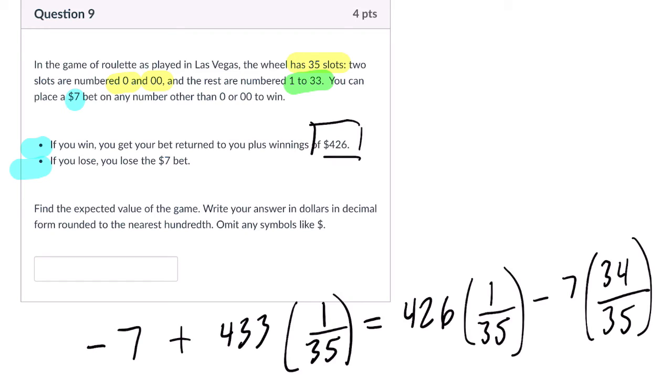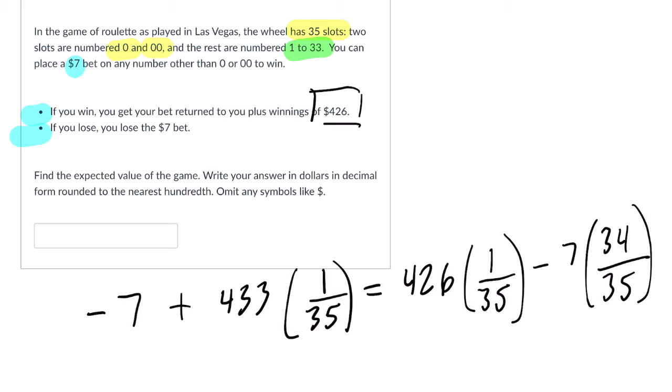Now, unfortunately, I can't pull up my calculator on the screen right now, so I'm just going to check both sides. Negative 7 plus 433 times 1 over 35. We get about, to the nearest hundredth, 5.37.